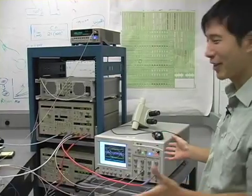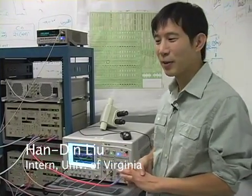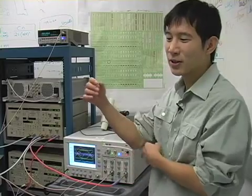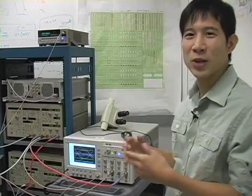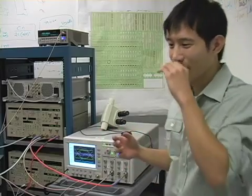This setup we have here measures the sensitivity of avalanche photodetectors. Basically, what this measurement means is how weak you can tune the optical signal and still detect what the signal is.